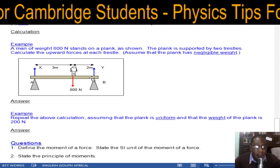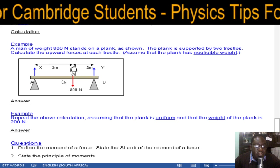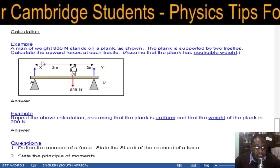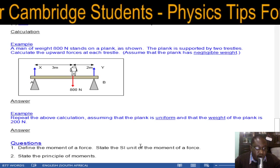Plus this 800 times 2 should equal the clockwise moment, which is 5X again, and then you find the unknown.